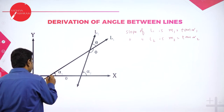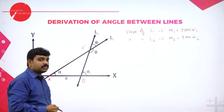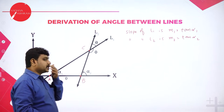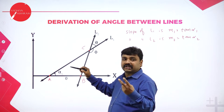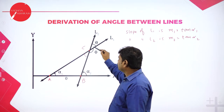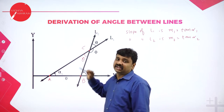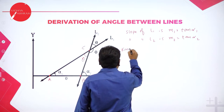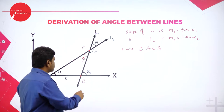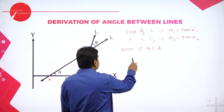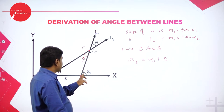Assume the lines intersect at c, forming triangle ACB. The angle between the lines is theta, and vertically opposite angles are equal, so theta appears on both sides. From triangle ACB, using the exterior angle theorem: exterior angle alpha2 equals the sum of interior opposite angles alpha1 plus theta. So alpha2 equals alpha1 plus theta, which gives theta equals alpha2 minus alpha1.